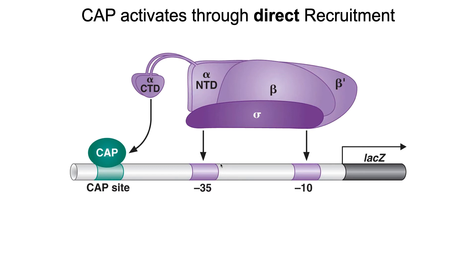That is the model that scientists have put forth — that CAP is simply acting as another sticky spot, recruiting the carboxy terminal domain. This is as opposed to an alternative hypothesis that CAP is an allosteric activator of RNA polymerase. That is not the case. Here are some experiments that support the idea that it's not allostery that's occurring — it's just recruitment, with the CAP activation domain sticking to the alpha carboxy terminal domain.